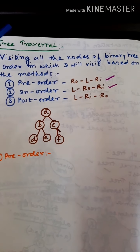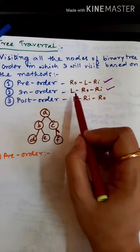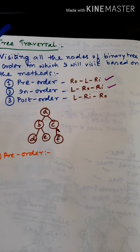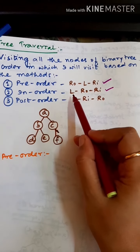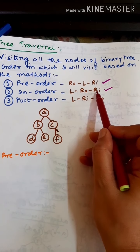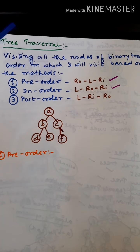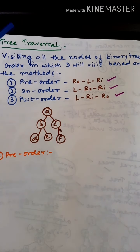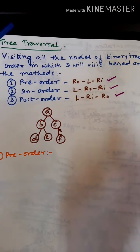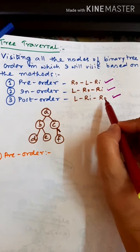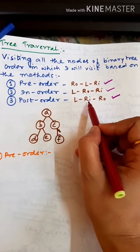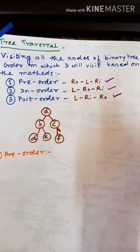In-order traversal means the root will be in between the left and the right subtrees — the root is at the middle. The third method is termed as post-order. Post-order means the root will be at the last. First the left subtree is traversed, then the right subtree of the root, and last the root.